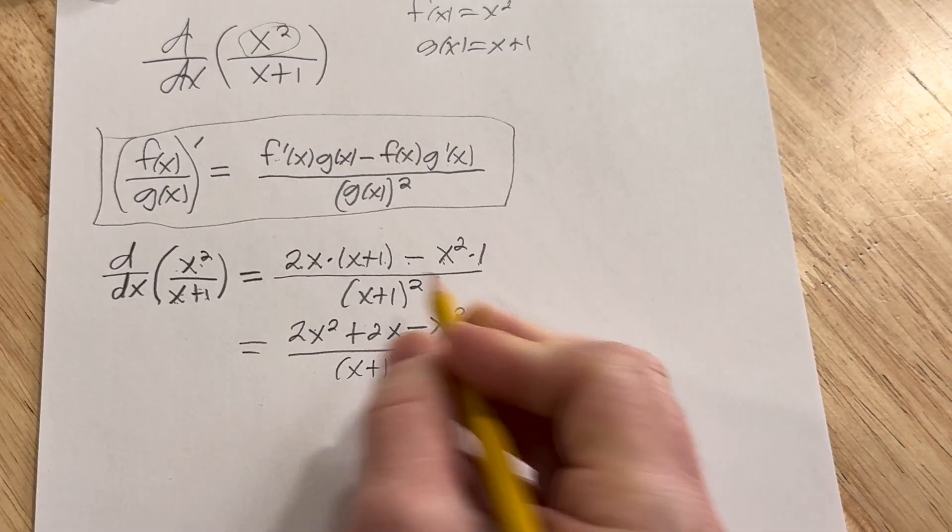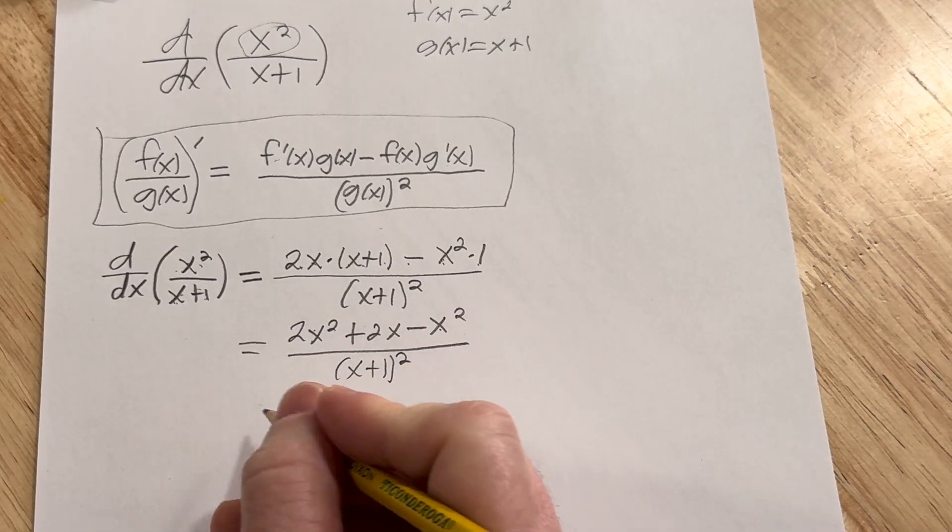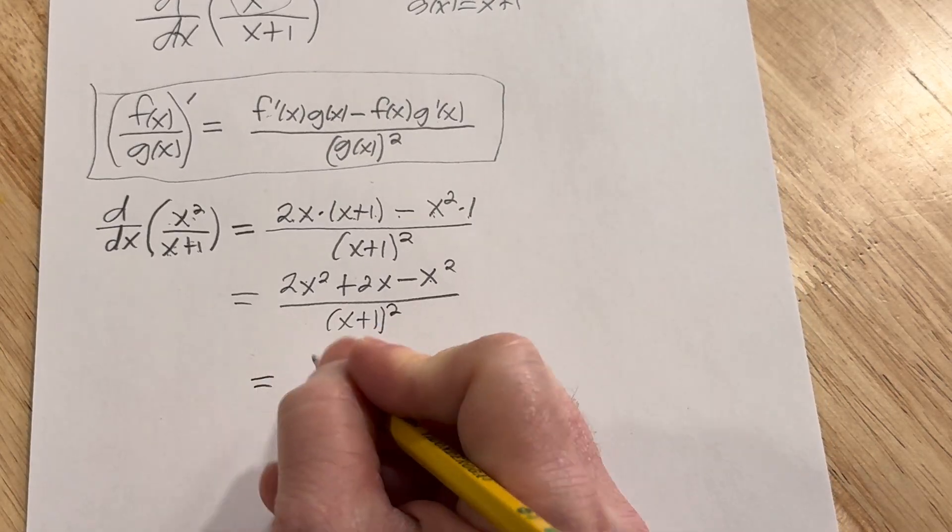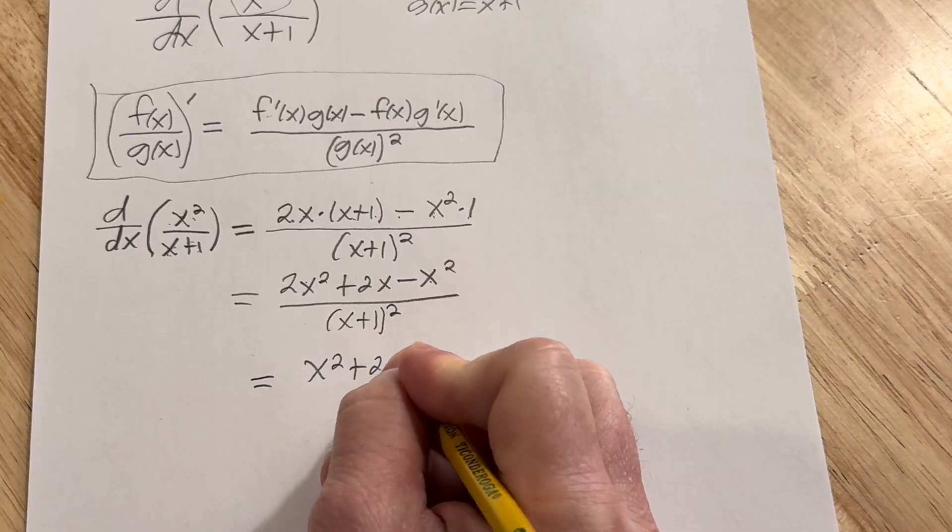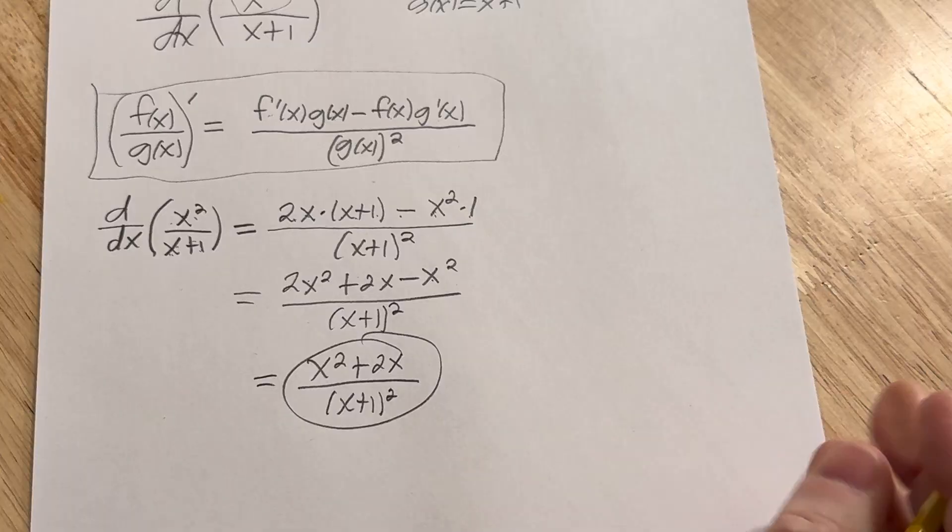We get some cancellation here. Combine like terms. 2x squared minus x squared is simply x squared. So this is going to be x squared plus 2x over x plus 1 quantity squared. And that should be the final answer.